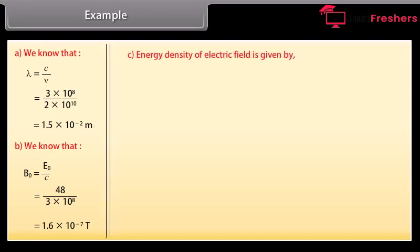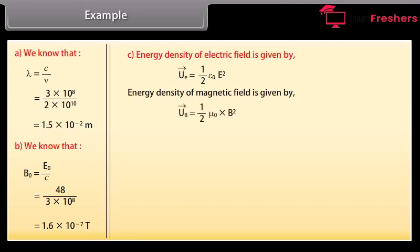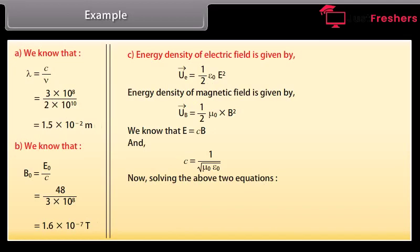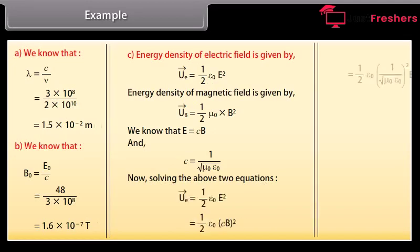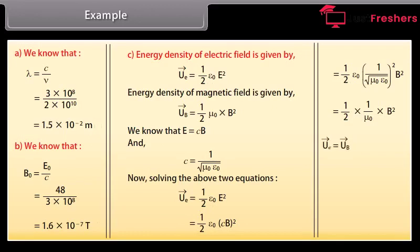Energy density of electric field is given by ½ε₀E². Energy density of magnetic field is given by B²/(2μ₀). We know E = cB and c = 1/√(μ₀ε₀). Solving these two equations shows that the average energy density of the electric field equals the average energy density of the magnetic field.